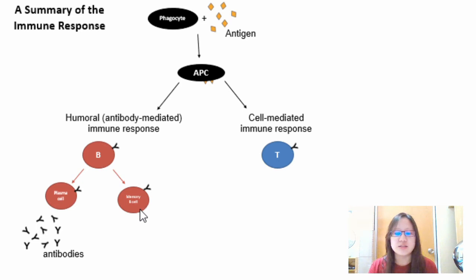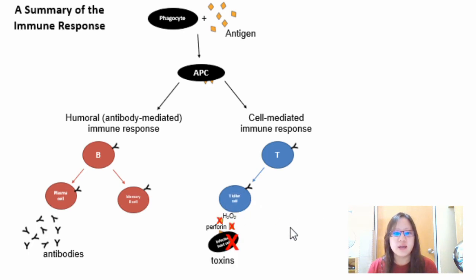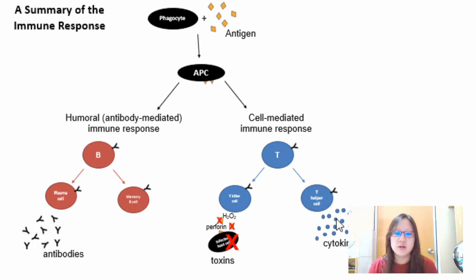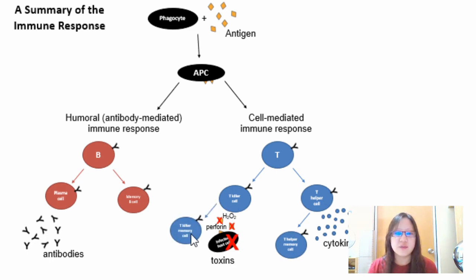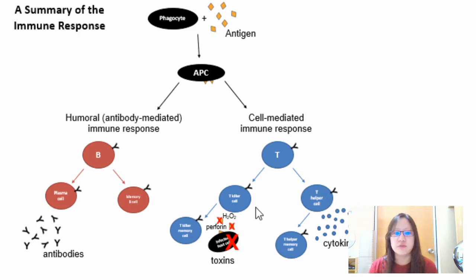In the cell-mediated immune response, activated T cells produce T killer cells, which secrete toxins into infected host cells to destroy them, and T helper cells, which secrete cytokines. T helper cells develop into T helper memory cells, and T killer cells develop into T killer memory cells — so there are three types of memory cells in total.